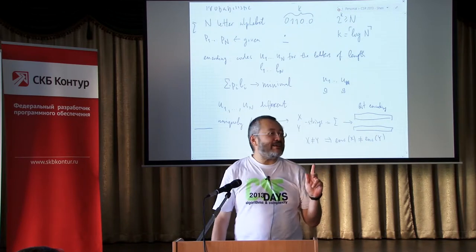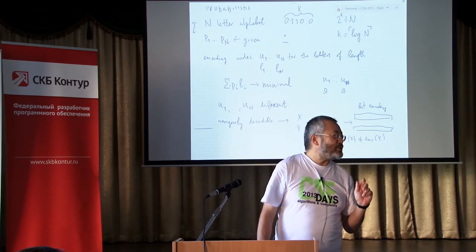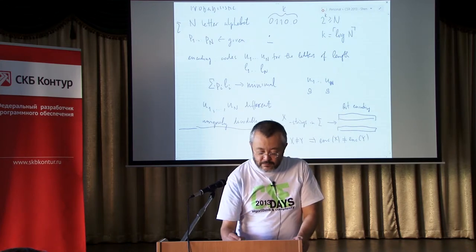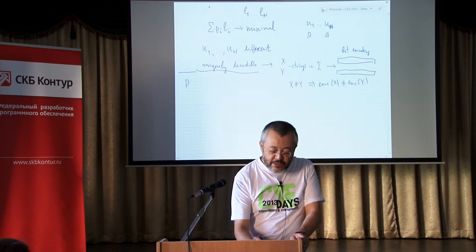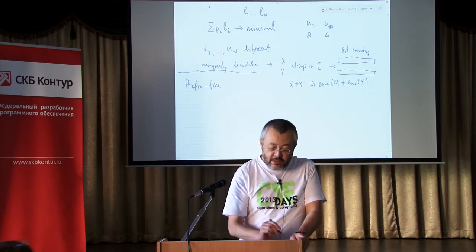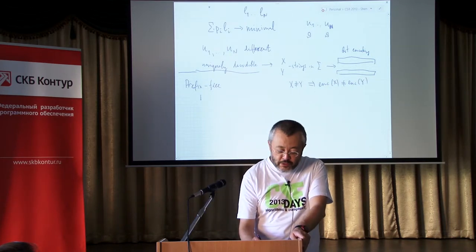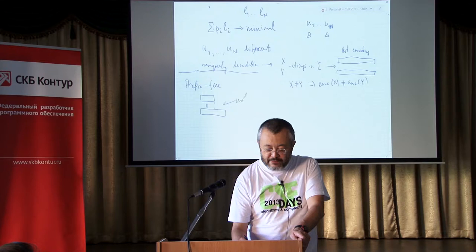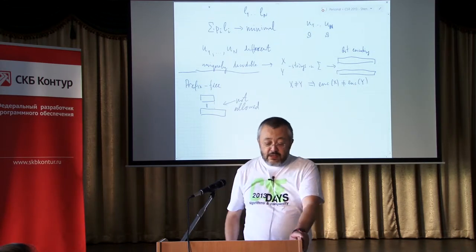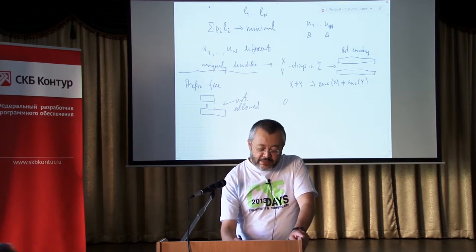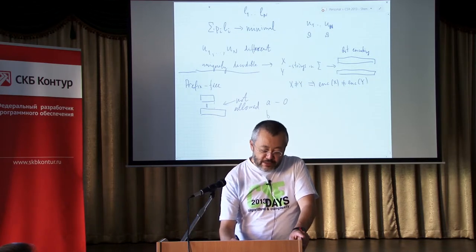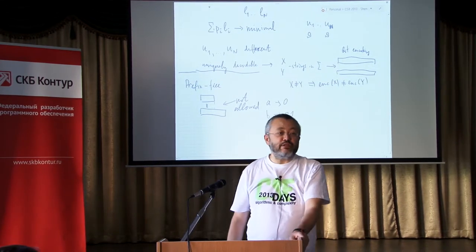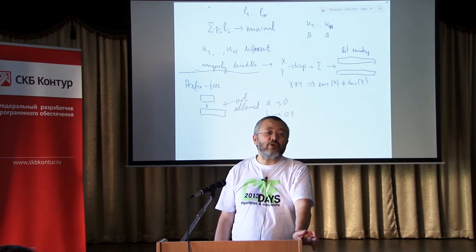There is another property called prefix-free. Prefix-free means that if we have two code words, it's not possible that one of them is a prefix of another. For example, if letter A is encoded as '0', it's not good to encode letter B as '01', because then A's code is a prefix of B's code. That is not a prefix-free code.